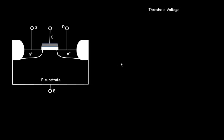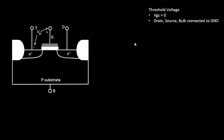To begin with, the gate-to-source voltage VGS should be equal to 0 volts — that's the voltage across the gate-to-source terminals. That is the first criteria while deriving the threshold voltage. The second criteria is that the drain, source, and bulk should all be connected to ground. Those are the two important conditions for deriving the threshold voltage.